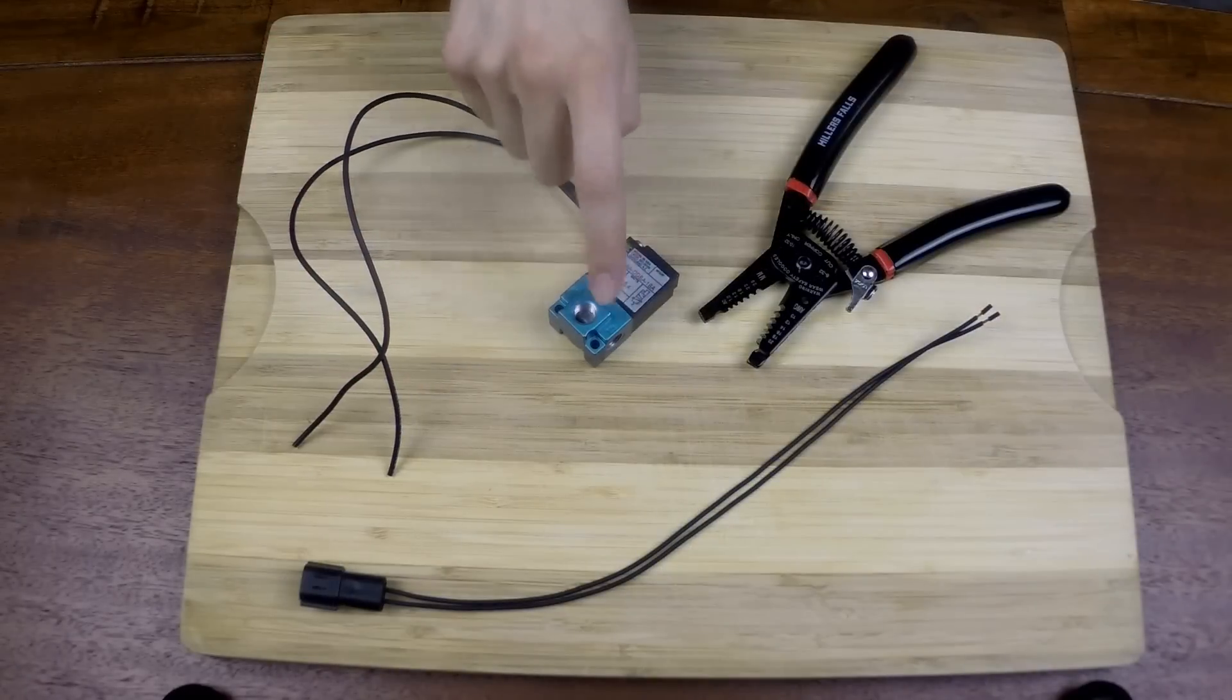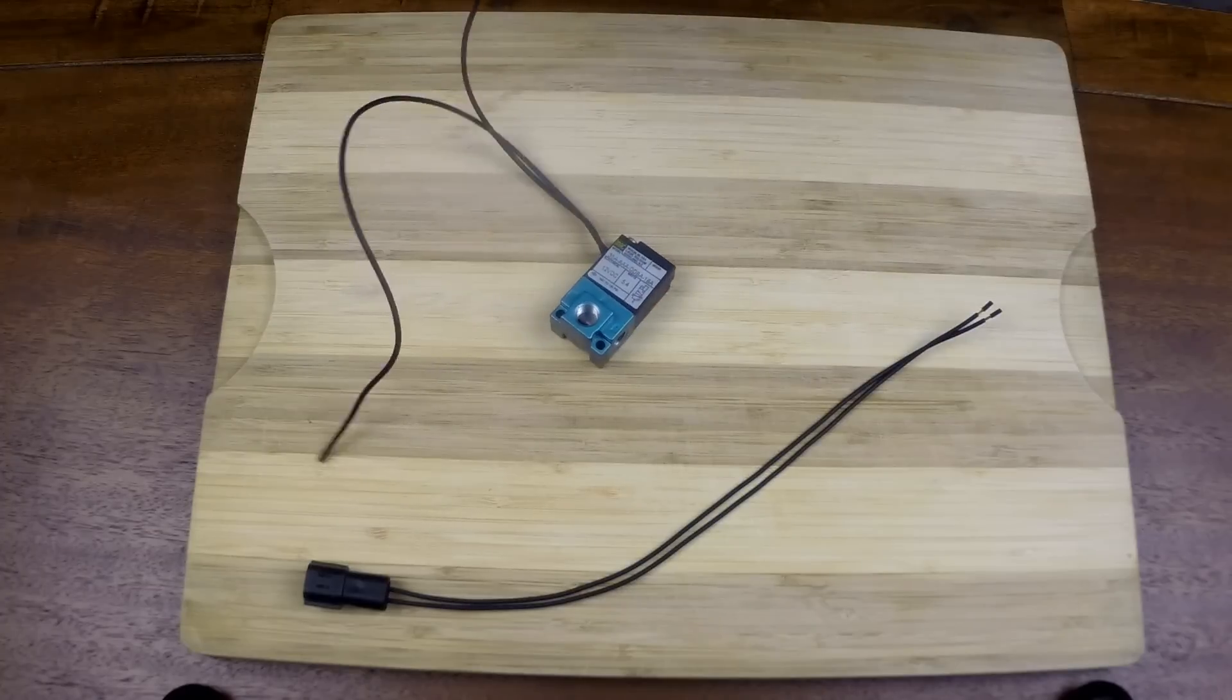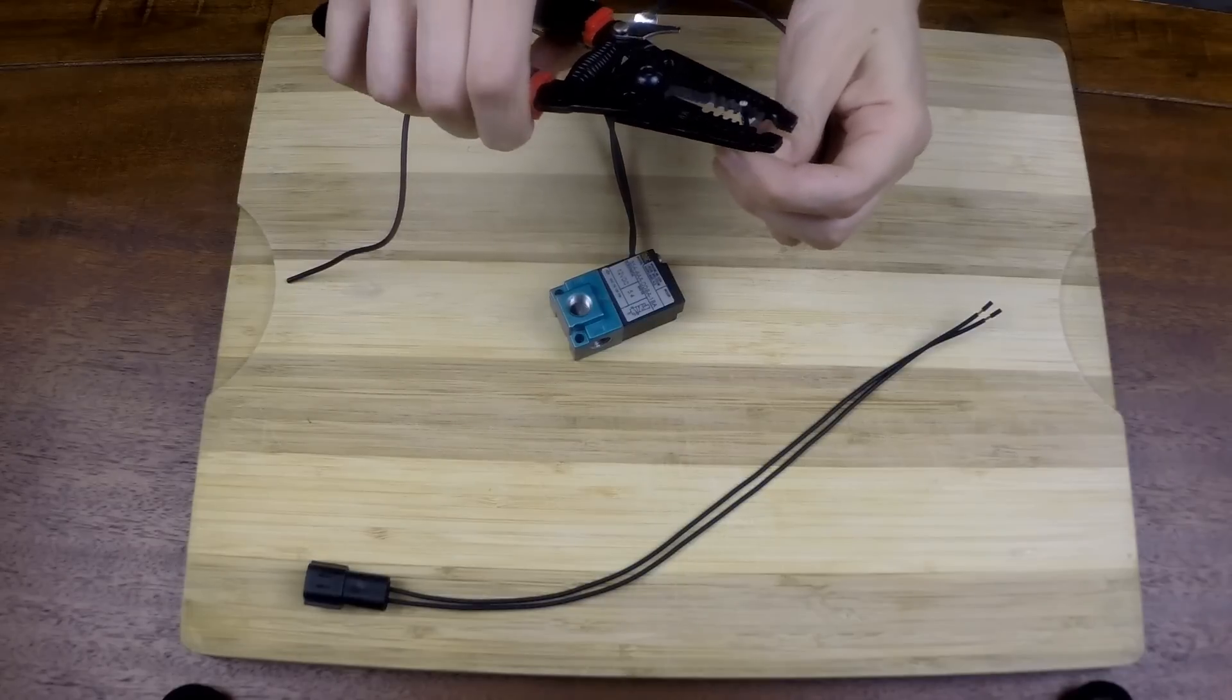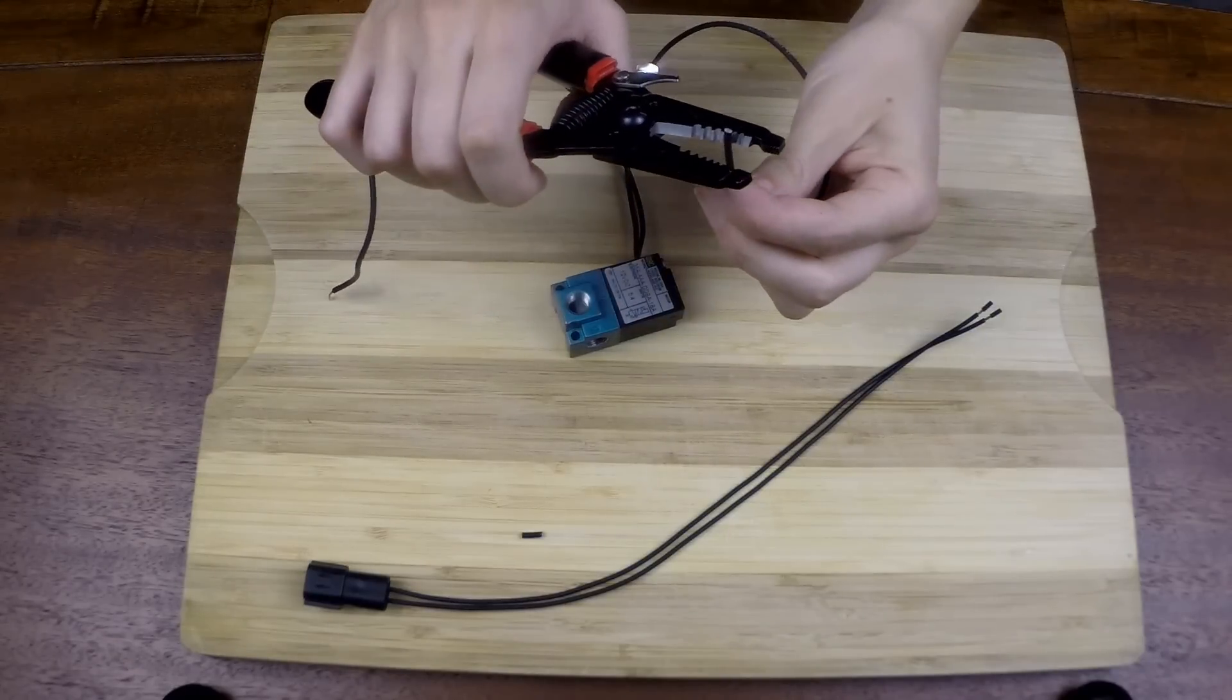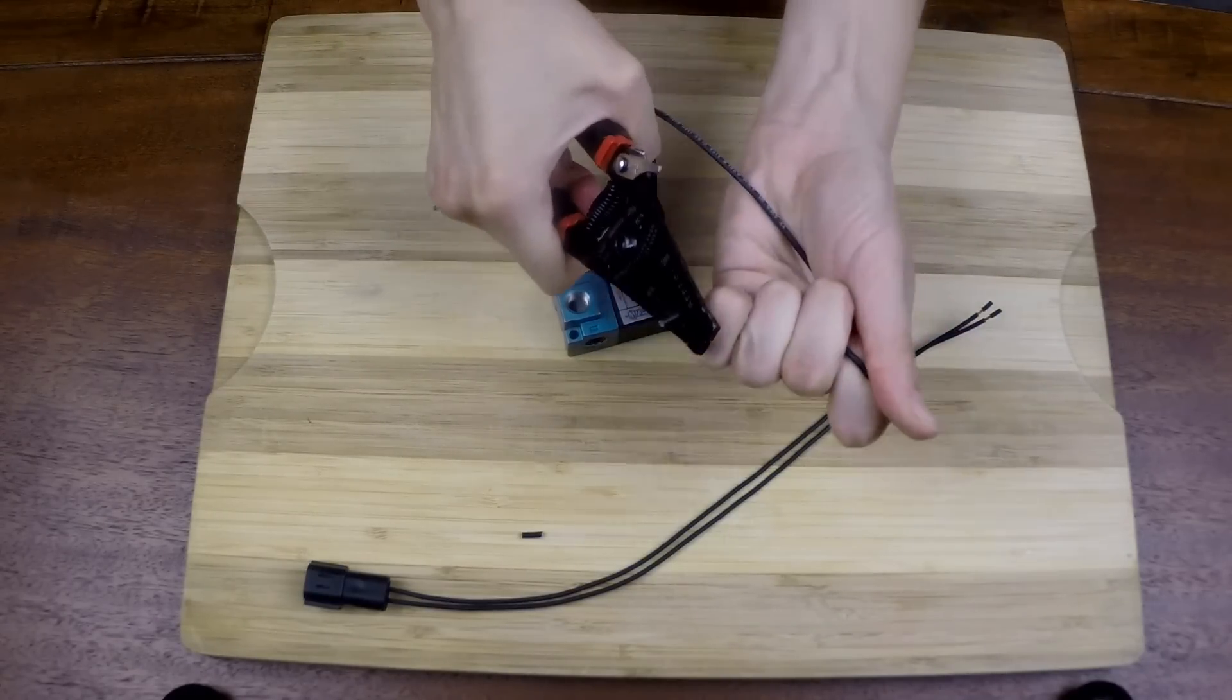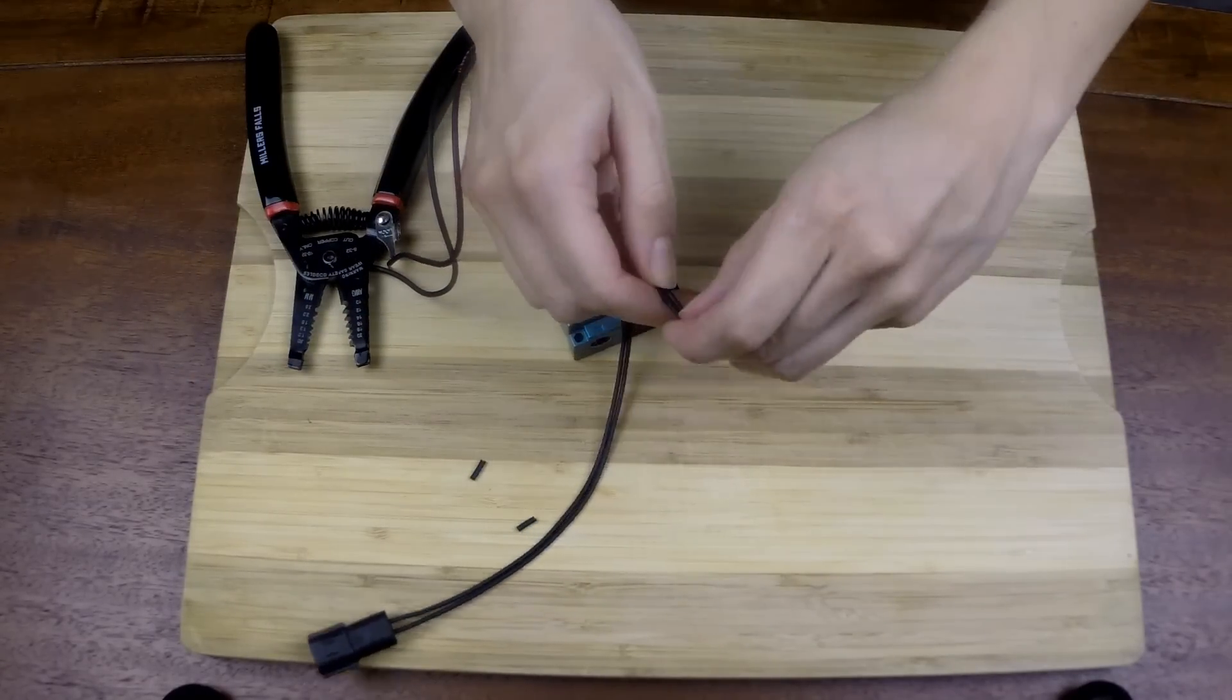First you're going to want to grab your solenoid wiring harness and wire strippers and we're going to go ahead and strip these wires. Now these ones are already stripped so we're going to take the tops off.